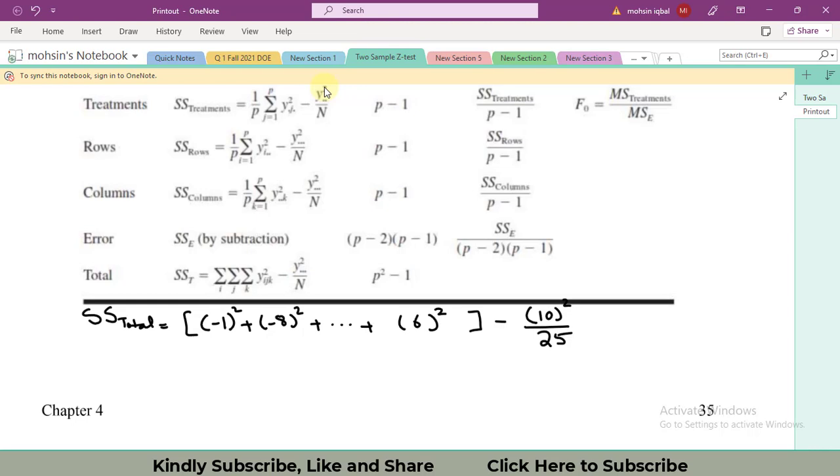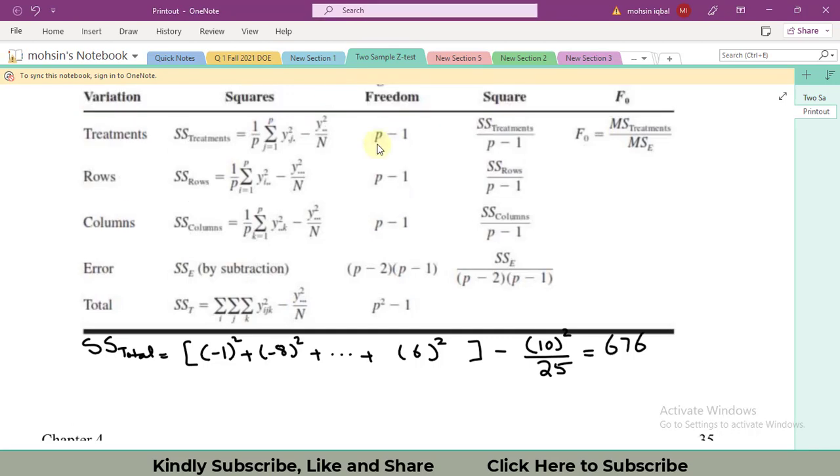We have the last value equal to six squared. However, during the calculation you will have to write all you have to include all of these values if either you want to do it using Excel, Minitab, or the calculator. Upon solving I got 676.